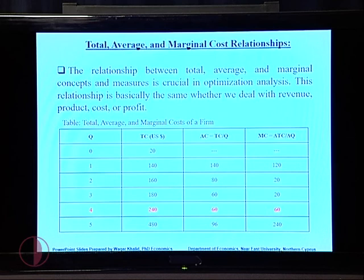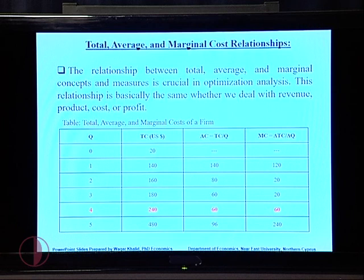Now we turn to total, average and marginal cost relationships. What is the relationship between total cost, average cost, and marginal cost? We often use the relationship between total, average, and marginal cost — and marginal revenue — in optimization analysis. For knowing the optimal level of output, we need to use the concepts of marginal cost and marginal revenue.